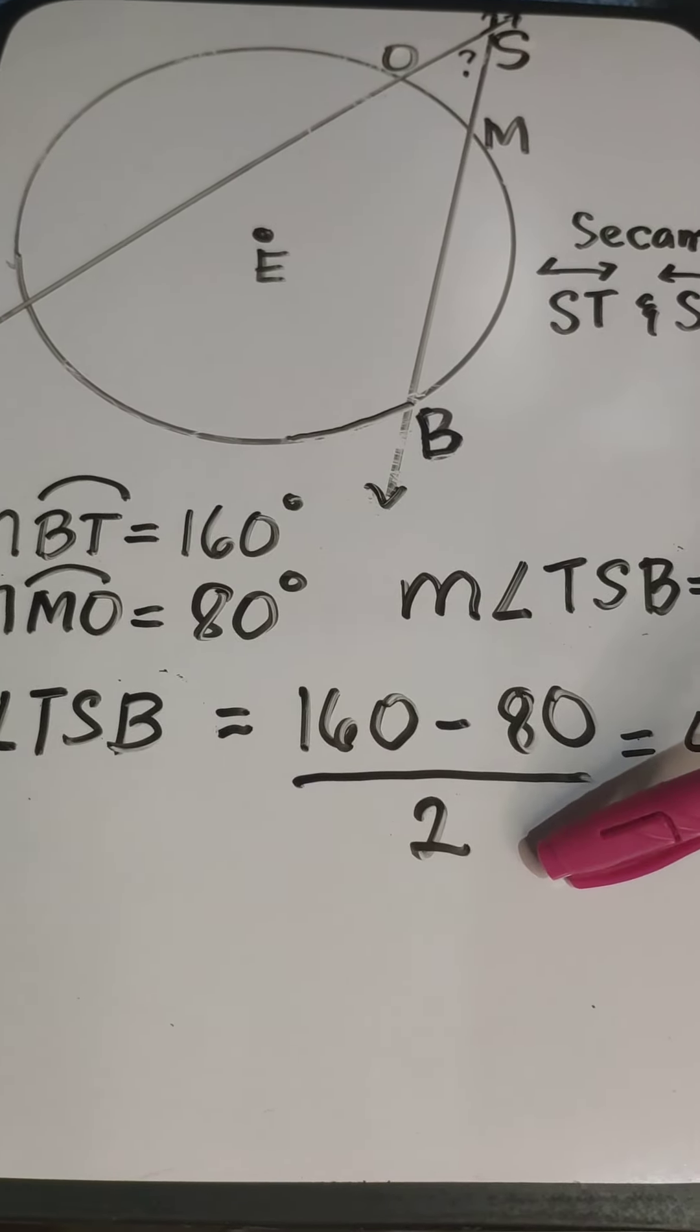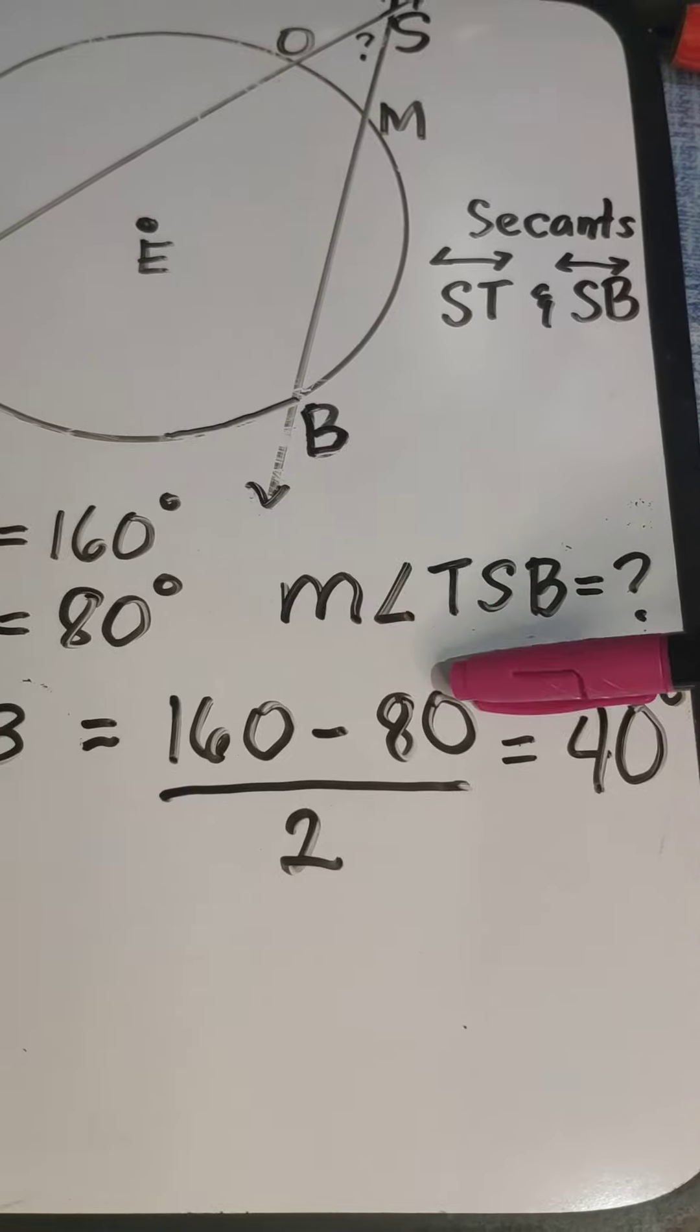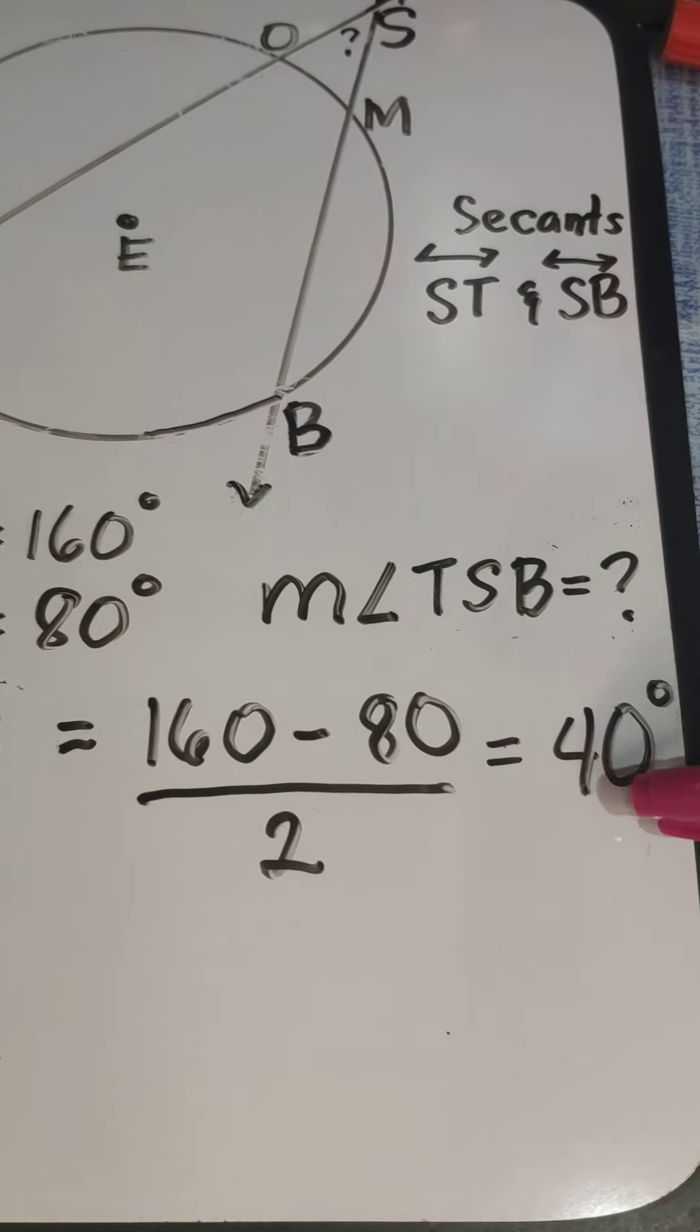Then half of that or divided by 2. So 160 minus 80 is 80 divided by 2, 40 degrees.